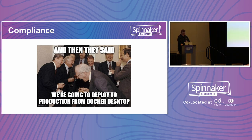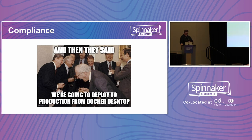Halyard relies on execing in, which also poses a challenge for us because on our internal cloud platforms and public cloud platforms they've been locked down. We can't exec into pods outside of dev, which is obviously a problem when your deployment tool relies on you execing in. So we basically had a choice between running Halyard in dev and deploying to production — which the regulators wouldn't have been too pleased about — or doing it from Docker Desktop, which they'd be even less pleased about. It basically made Halyard a non-starter for us.